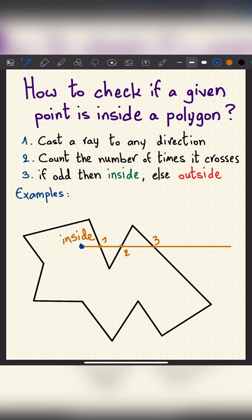Let's see another example. Let's say our point is here. We cast a ray to the right again. And we count. We have one, two, three, four. Four is even, so this point is outside the polygon, as you can see.